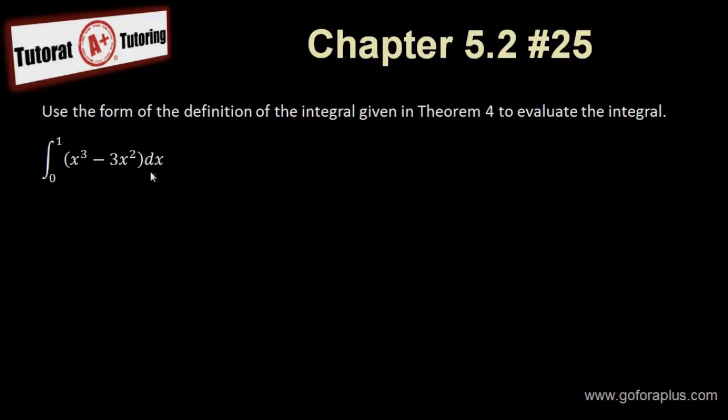Now solving this problem. So I first need to find out what is delta x. Delta x is b minus a over n. But then what is b minus a? b is 1, a is 0 over n. So this is going to be 1 over n. So my delta x is 1 over n.